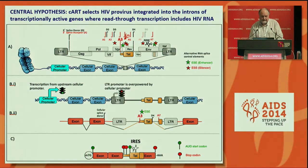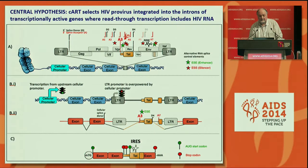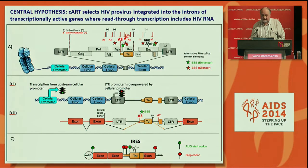In the first part of this figure, you can see how HIV is normally integrated into the intron of a transcriptionally active gene. This would normally lead to the LTR promoter being overpowered by the upstream promoter, and the proviral RNA in the pre-mRNA would be simply spliced out. But we believe, because there are so many RNA splice control elements that are also essential parts of HIV replication, that in some cases we can get splicing between cellular exons and different parts of the HIV RNA, especially at the A3 site, which encodes for the TAT protein.